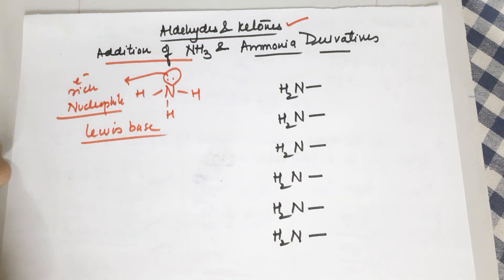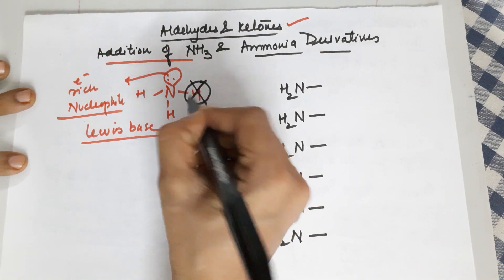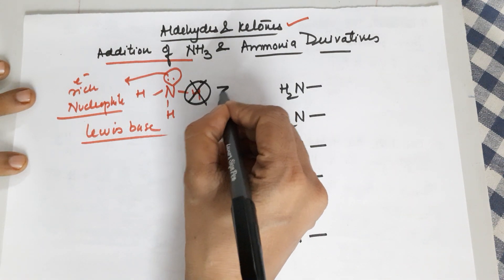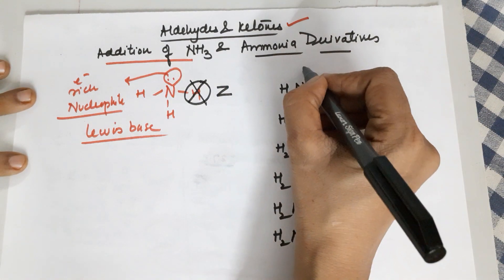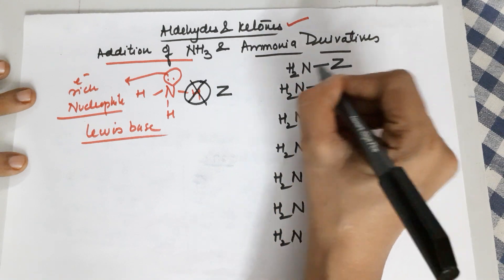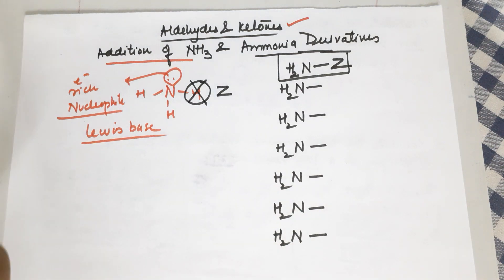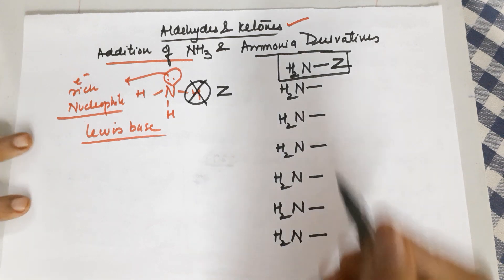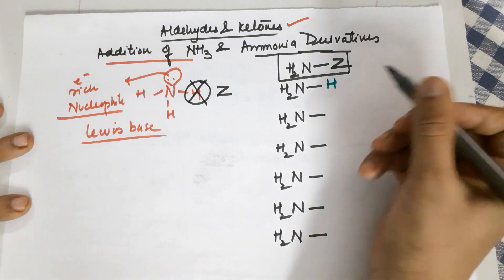When I talk about ammonia derivatives, what I mean is that one of the hydrogens is removed and against it you can add some group which I am referring to as Z. So the common formula for an ammonia derivative is NH2-Z, where one hydrogen has been removed and a new identity Z is added. Ammonia itself falls into this category if Z is H.